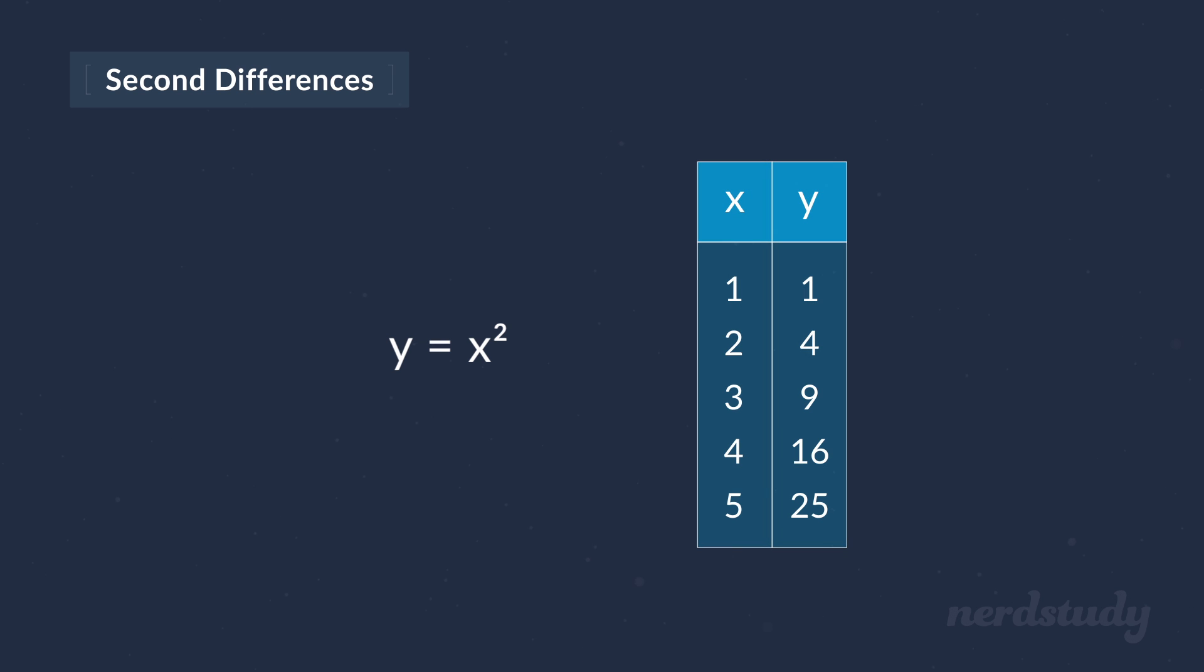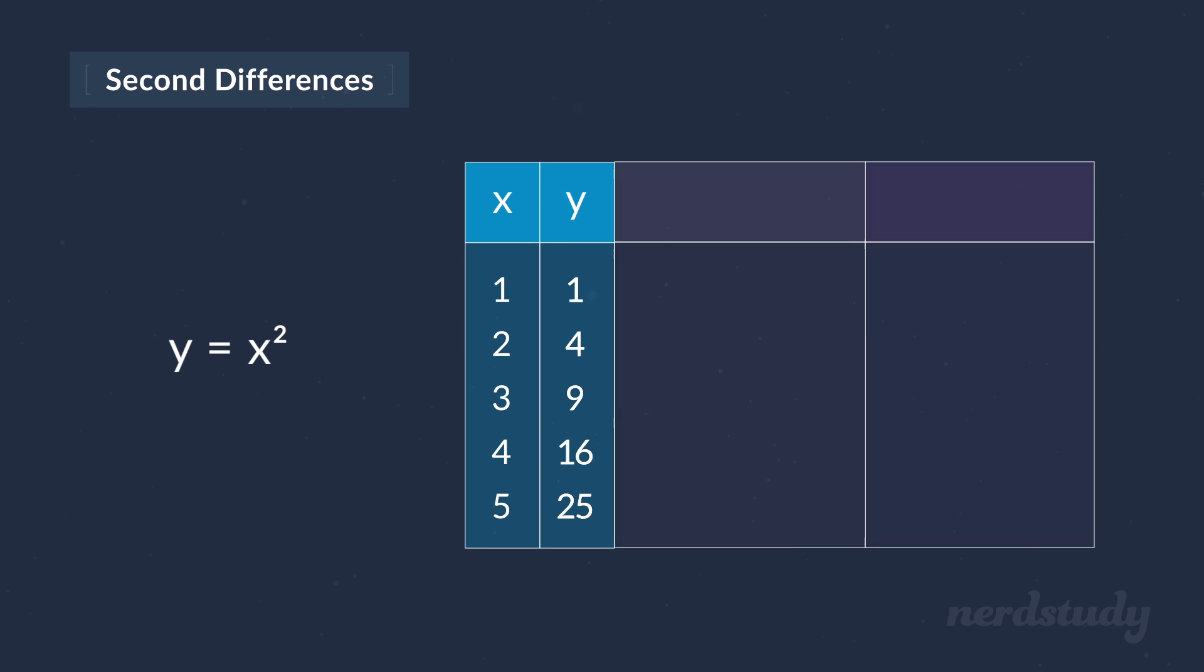So the way we find them is by first creating a chart with the x and y values of this equation. Just make sure that the x values are evenly spaced out. In this example, the x values are consecutive, so they go up by one. But if we wanted to, we could go up by twos or threes or even any number as long as they are consistent. So from here, let's add two more columns in our chart, which we will name as first difference and second difference.